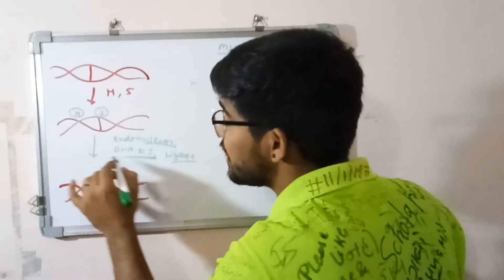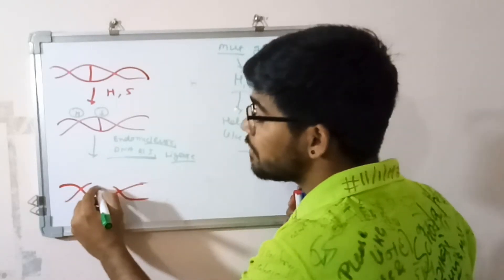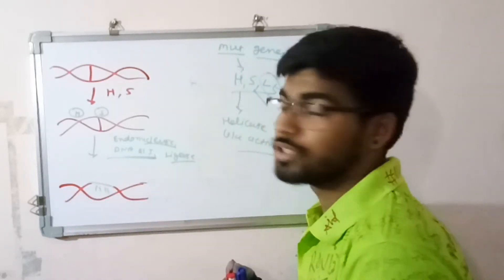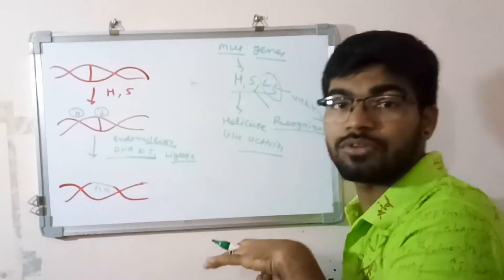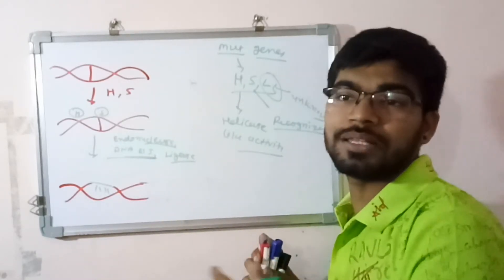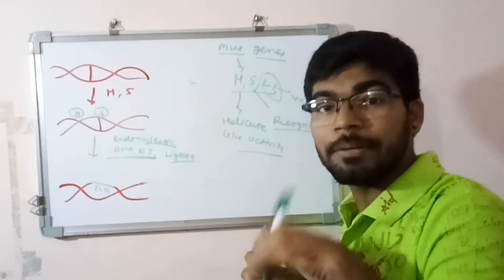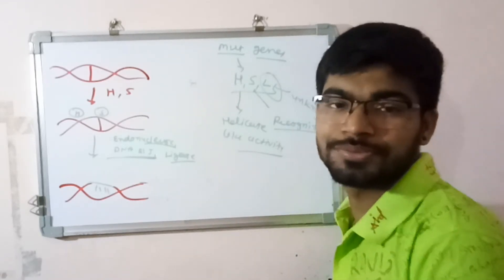The gap is filled by DNA polymerase one and sealed by ligase. So this is the overall mechanism of mismatch repair after the replication and during the replication mechanism. I hope you understand.